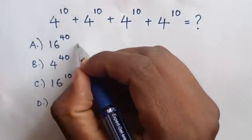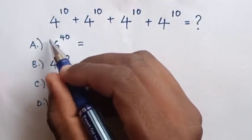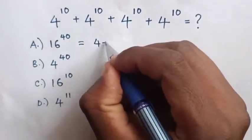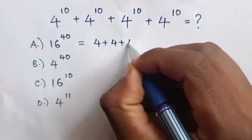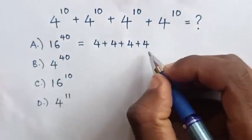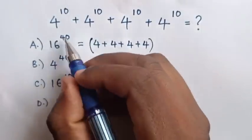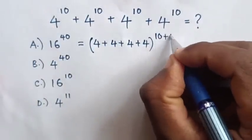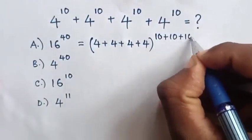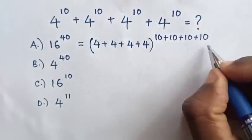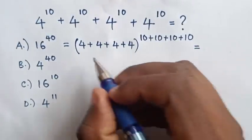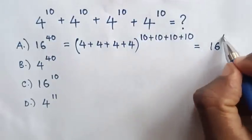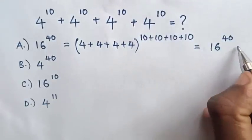For answer A, the base 16 is the sum of these bases — 4 plus 4 plus 4 plus 4 — then in brackets, raised to the power of 40, which is the sum of these powers: 10 plus 10 plus 10 plus 10. So this gives 16 to the power of 40. This is the wrong solution.